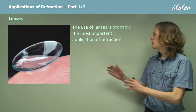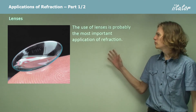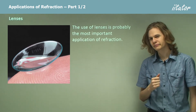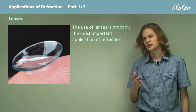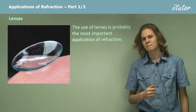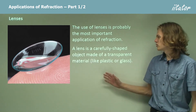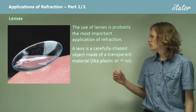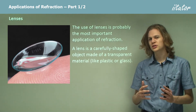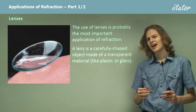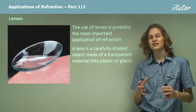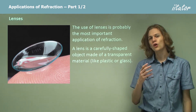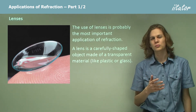So the use of lenses is probably the most important application of refraction. There are a number of different sorts of lenses and we're going to be going through those today. A lens is an object that's very carefully shaped and made in a very specific way out of a transparent material. It's built to refract light in a very specific way, changing its direction, and it can often focus that light in a particular way.